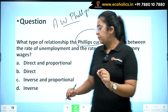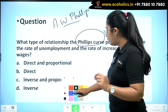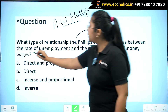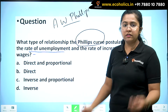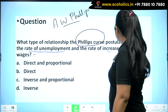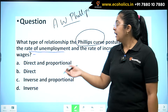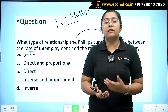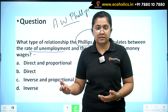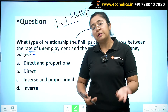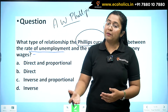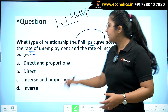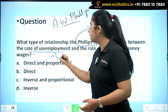Initially, the concept lay between the two variables mentioned in the question — the rate of unemployment and the rate of increase of money wages. When money wages increase, people will demand more, and when demand is more, the rate of inflation will be more. So it's an indirect concept — technically they are talking about inflation.